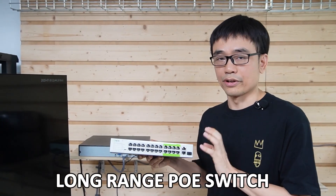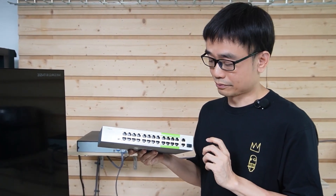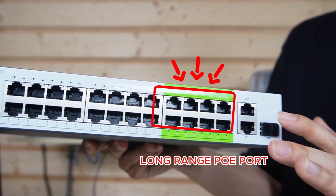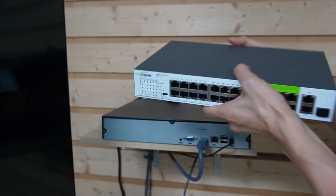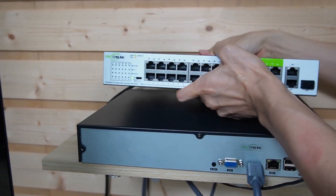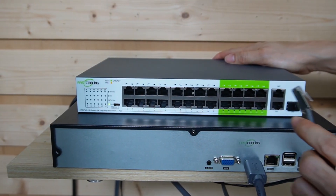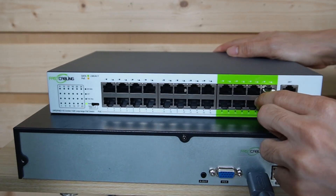In the control room, we need one device called a long-range POE switch. This is the 24-port long-range POE switch. The last 8 ports, labeled in green, have the long-range chipset built in. It can push data up to 500 meters with a network speed up to 100 Mbps. Let's power up this long-range POE switch and connect the 500-meter cable to one of the POE ports — we picked the last long-range POE port, port 24.